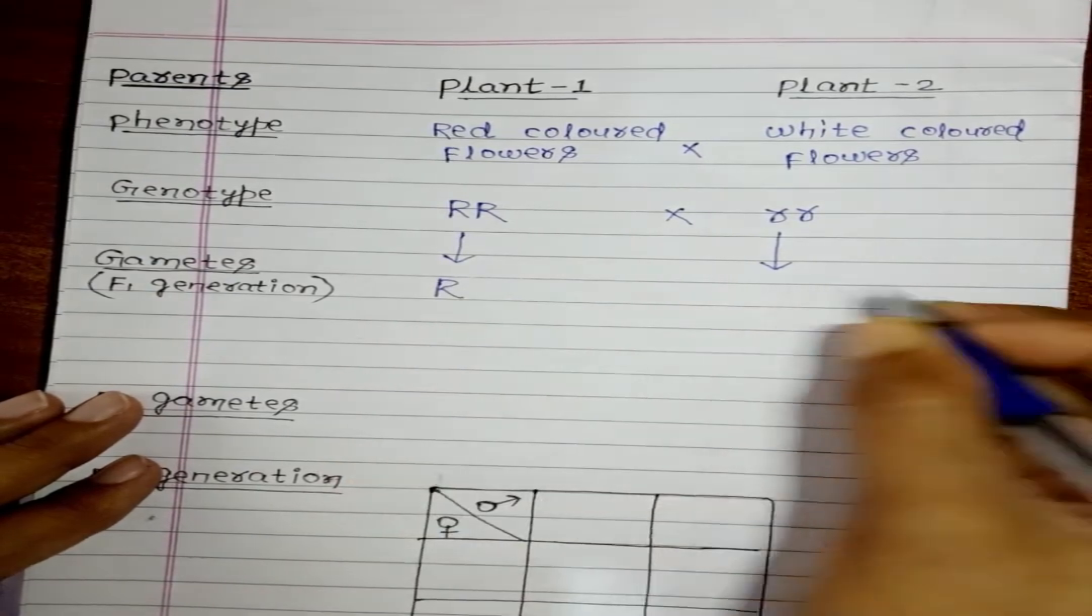So the gametes will be formed from this. The gametes will be formed in the F1 generation. So if it will cross together, it will form capital R, small r.